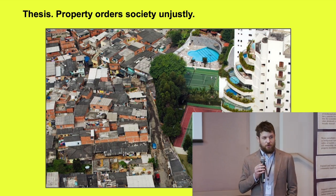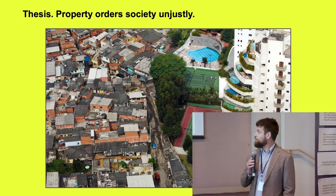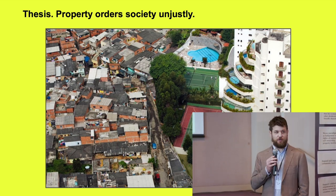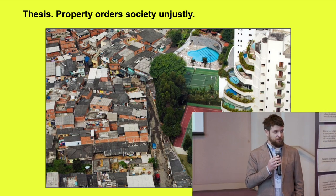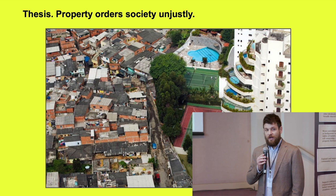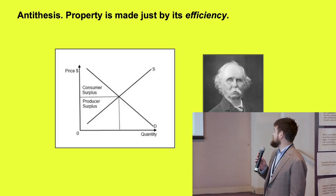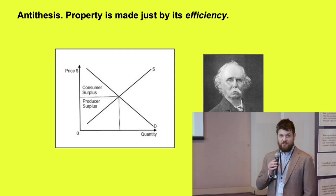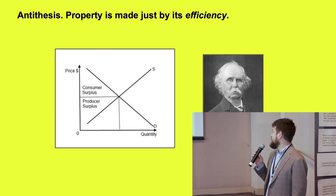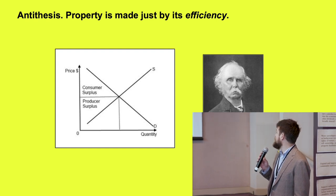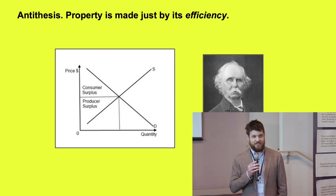When I was young, the palpability of the injustice of how property orders society was evident in the area where I grew up. When I went to school and got educated, I learned sort of an antithesis to that, which is the idea that property is made just by its efficiency. This is a picture of a supply and demand graph, and that is a picture of Alfred Marshall, who was the creator of that idea.